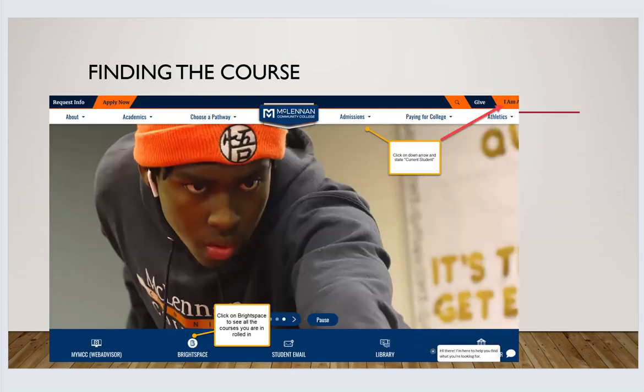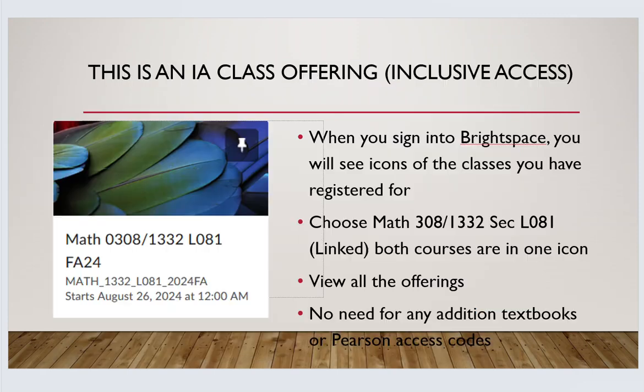You'll have to go to our webpage, sign in as a current student, and then look for the Brightspace button. Once you get there, you'll look on your listing of classes for Math 0308-1332-L081-Fall24, which is an inclusive access course. That means you buy nothing except your writing instruments, calculator, etc.